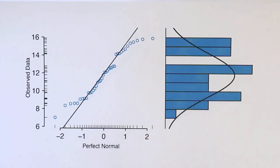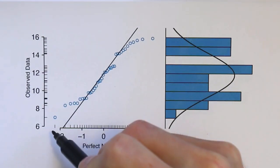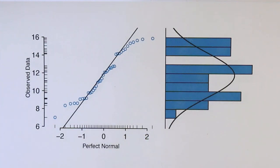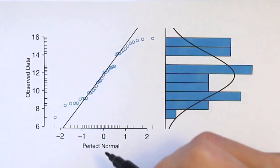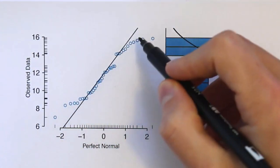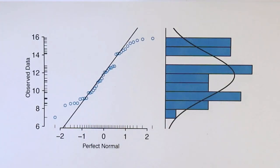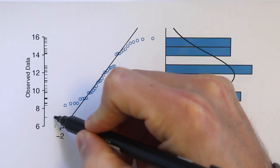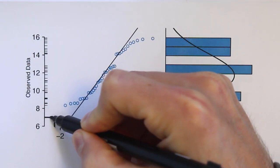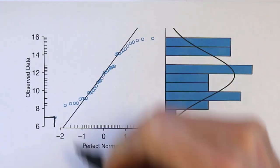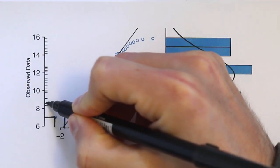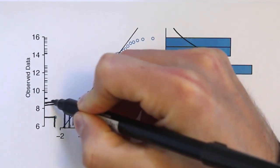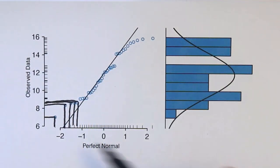Let's go through how we construct this plot. We have what would be a perfectly normally distributed data set — as perfectly normal as any data set can be. Then we have our actual data set represented on the y-axis. For each point on the plot, we take our first observation from the perfectly normal data set and line it up with the first observation from our actual data set, then do the same with the second, third observations, and so on. That's where all these different points come from.